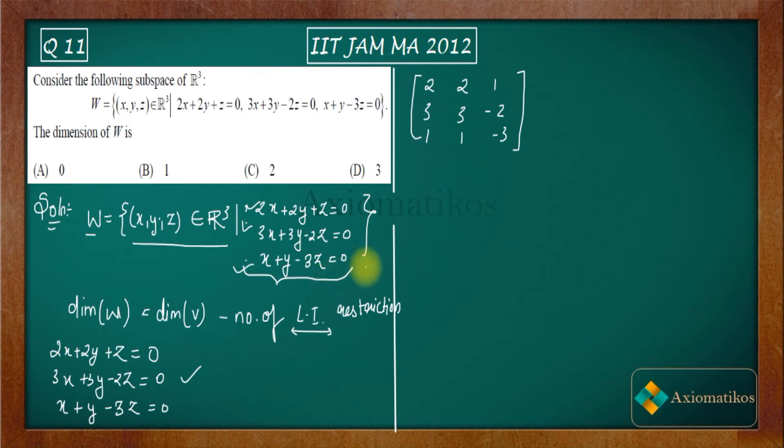If we somehow find out the rank for this matrix and we prove that rank is, suppose, two, then we will say that there are only two linearly independent equations here. So what we will do? We will be using row reduced echelon form here.